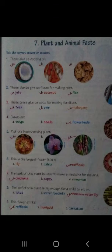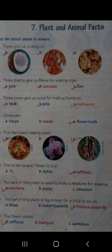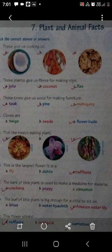Come to the next one. These plants give us fibers for making rope. Rope जो हम लोग यूज करते हैं, जूट की ropes - ये हमें plants से मिलती हैं. Three options दिये हुए हैं: जूट, coconut, flex. हमें rope इन तीनों plants की fiber से मिलती है. Jute rope भी होती है. Coconut के ऊपर की shell से भी rope बनाई जाती है. And flex की fiber से भी rope बनाई जाती है.